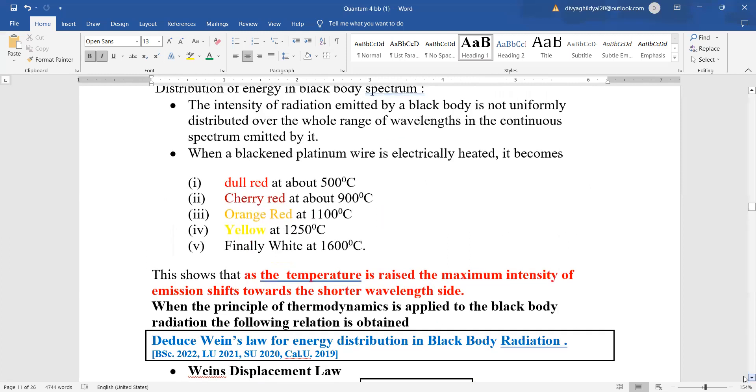When a blackened platinum wire is electrically heated, this you must have seen in the lab also, then in the beginning that is around 500 degree centigrade, it will show a very dull red color. Then the more you raise the temperature from 500 to 900 degree centigrade, the color will become cherry red. Then more you heat at 1100 degree centigrade, it is orangish red and further heating at around 1250 degree centigrade, it is yellow in color and finally you get the white color.